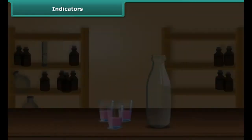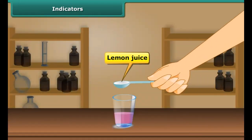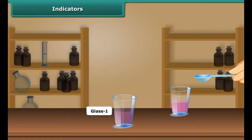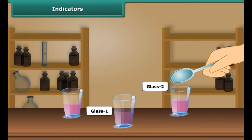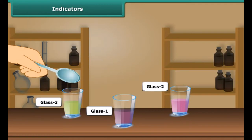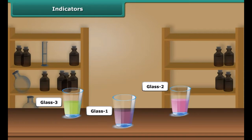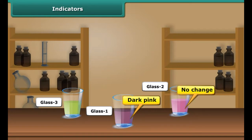Take a small amount of this indicator in three small glasses. Pour lemon juice in the first glass, water in the second glass, and soap solution in the third glass. You can notice that in glass one, the color changes to dark pink. Lemon juice is acidic in nature, so there is a change in the color of the indicator.